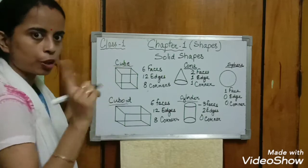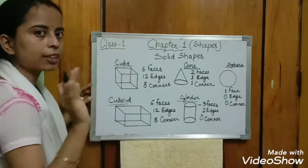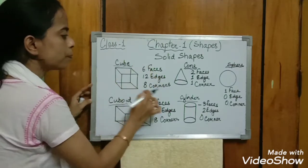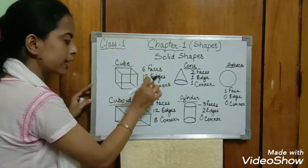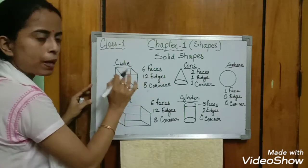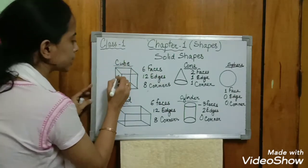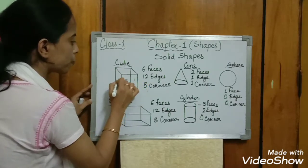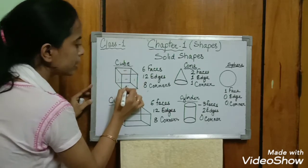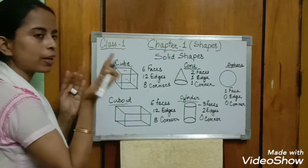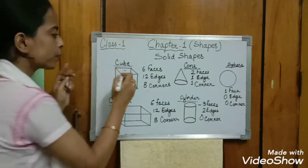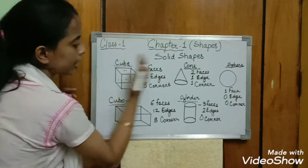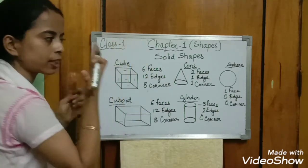First, the cube. Cube is a solid shape. Cube has six faces. Let me show you which are its faces: front face — one, then two, three, four, five, then the bottom — six. So cube has six faces: front, back, bottom, left side, upper, and back side — six faces total.